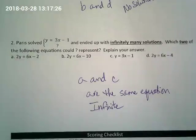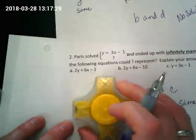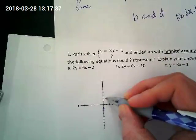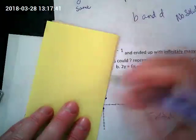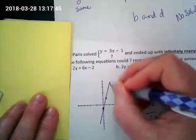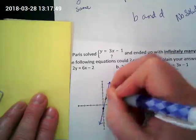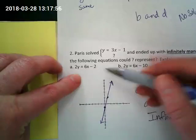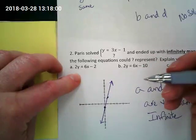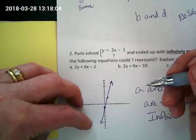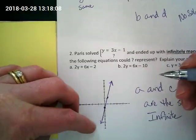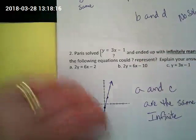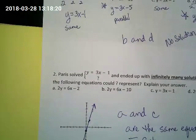If you weren't here that day, here's why: if I graph y equals three x minus one, every single x-y pair on that line is a solution I could plug into the equation and have it come out true. When another equation simplifies to the exact same thing, I can't graph it a second time — it's already graphed. It's the same line, so every point is a solution for both. It's infinite because the line keeps going in both directions.